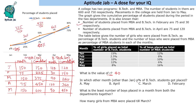The next question is: in which other month, other than January, did P% of BTEC students get placed? P% is 20%, meaning 120 BTEC students. Looking at the table, apart from January, in April we also have 120 BTEC students being placed. So the answer is April.